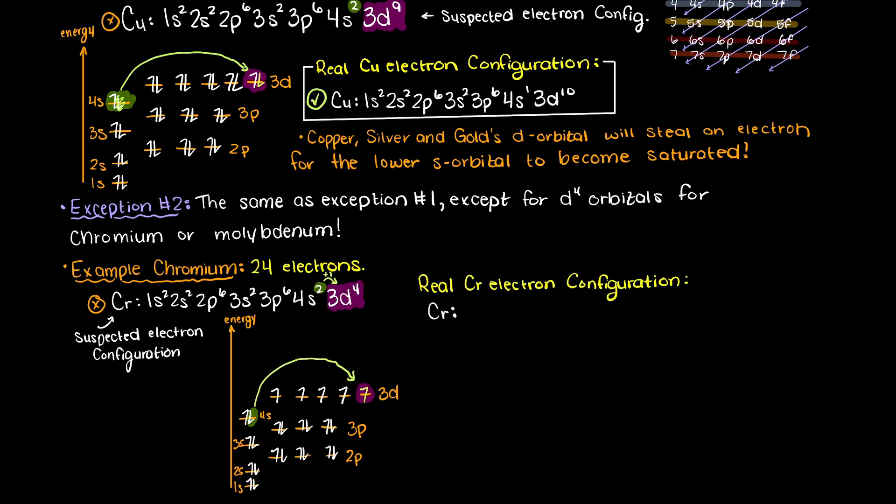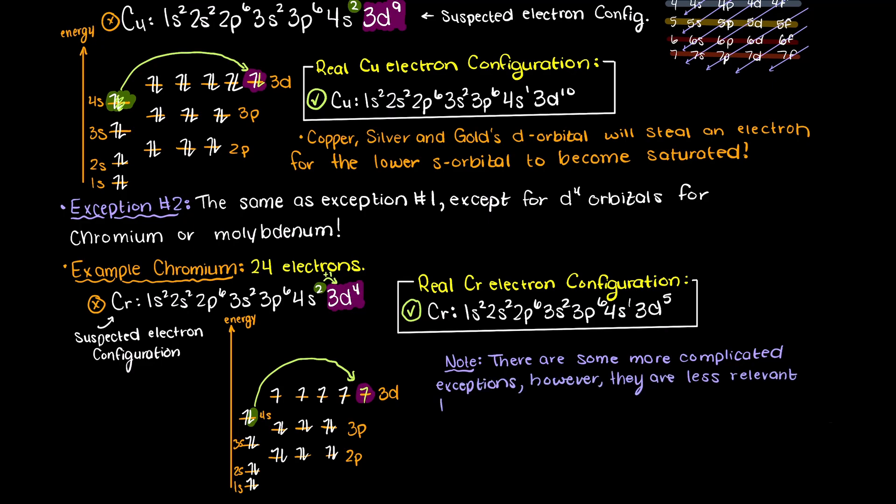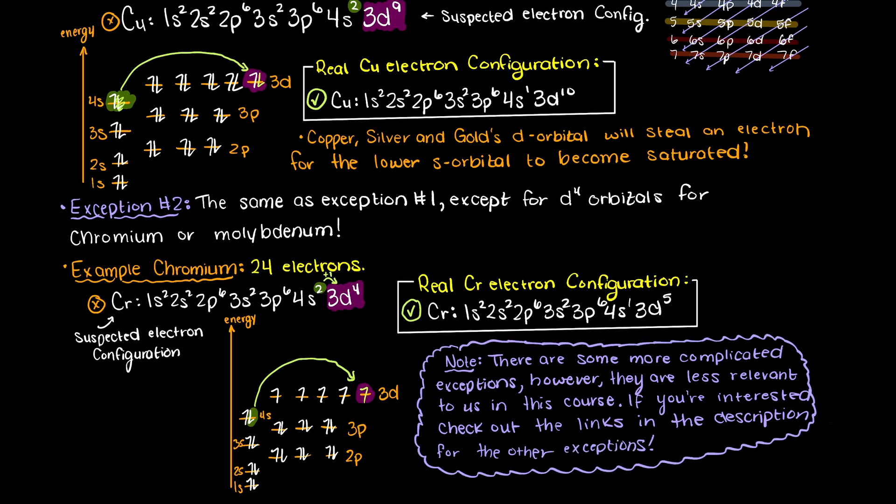I will leave a link in the description down below that shows you the electron configurations for all atoms on the periodic table, and then you can use that as a reference when completing examples for solving the electron configurations of given atoms. In addition, I will post a second link down below that talks about all the elements in which there are electron configuration exceptions, so check that out as well.